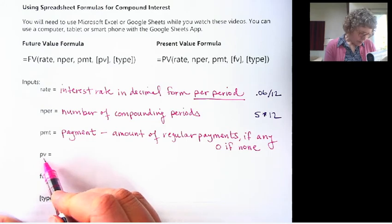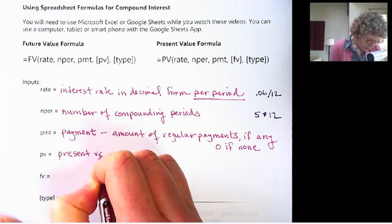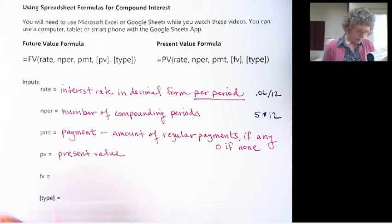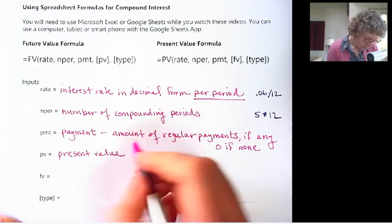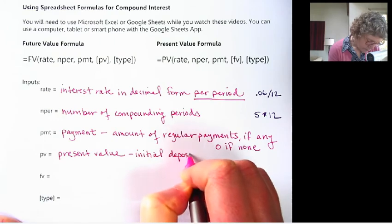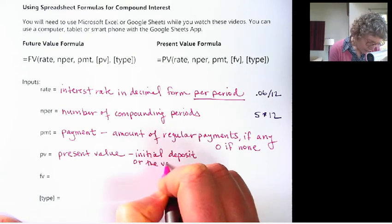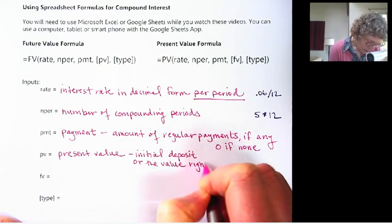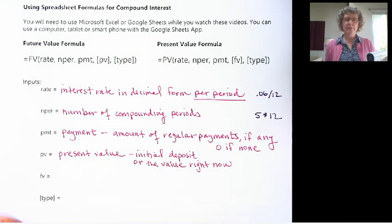PV is the present value. PV stands for present value. That is the value of the money right now. So it's your initial deposit. You could think of it as the principal or the value right now. Depending on the context, either one of those might make sense.